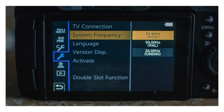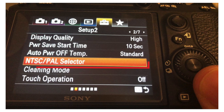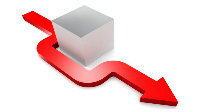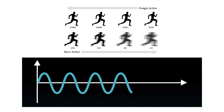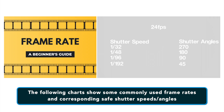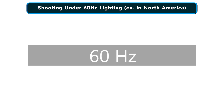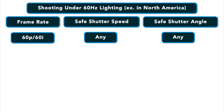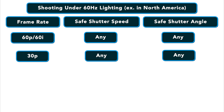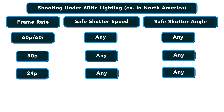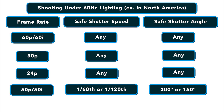Number two: change your shutter speed or shutter angle. If you can't change your camera's frequency, or if your client requires you to shoot in a specific frequency, there is a workaround — you can sync your shutter speed to the electrical frequency of your environment. The charts shown here display commonly used frame rates and corresponding safe shutter speeds or angles. Under 60 Hertz lighting: if your frame rate is 60P, 60i, 30P, or 24P, any shutter speed or shutter angle will be safe. If shooting 50P or 50i, safe shutter speeds are 1/160th or 1/120th, and safe shutter angles are 300 or 150.